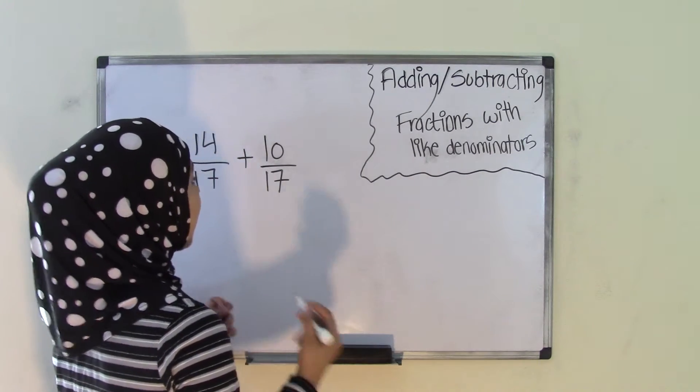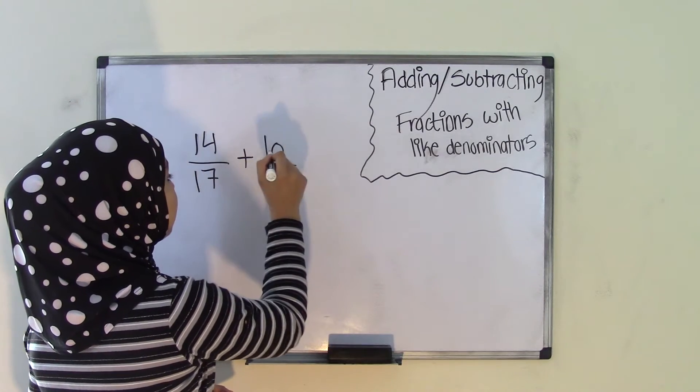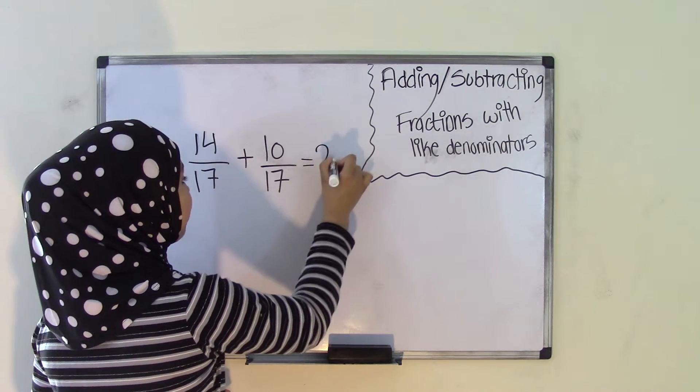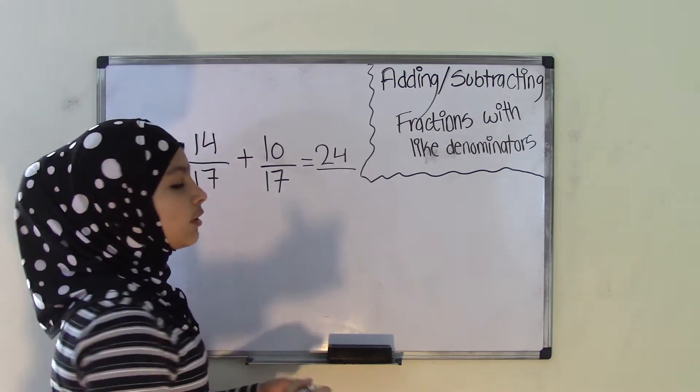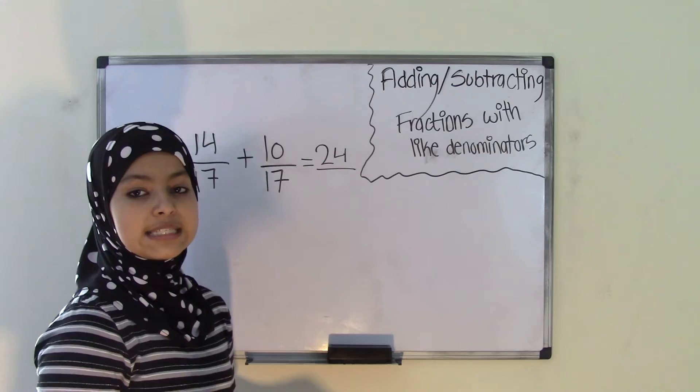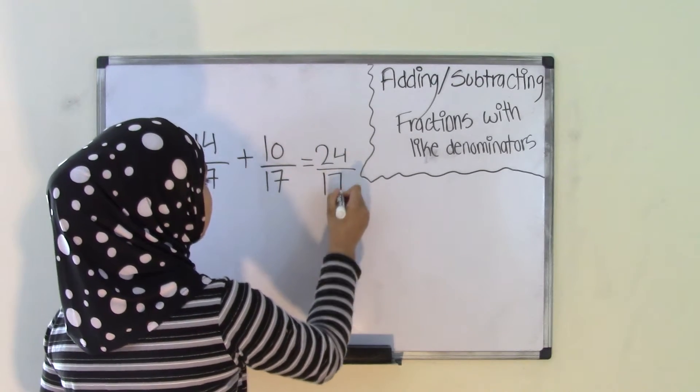And now all we're doing is adding. So 14 plus 10 equals 24. Now 17 and 17, these are the denominators. The denominator always stays the same. So you're going to write 17 as your denominator.